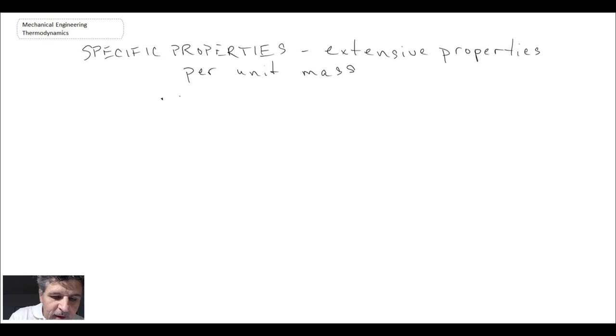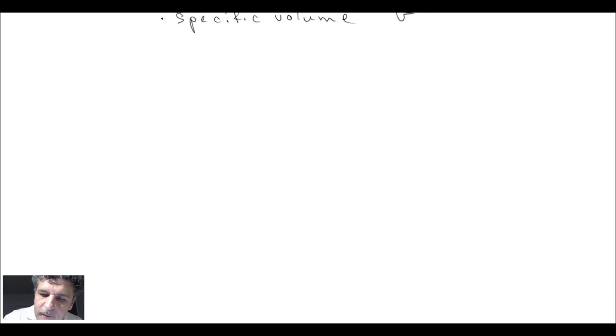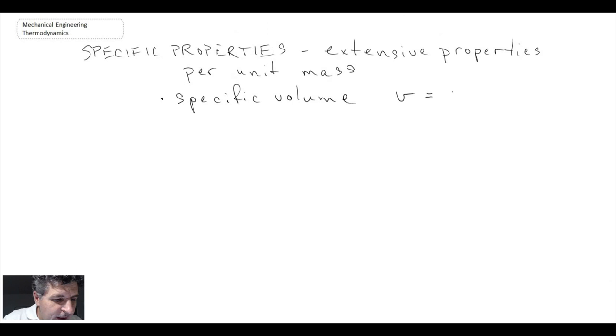And so examples of these: specific volume, and here we use a little v. Don't confuse it with velocity. In thermodynamics, this little v is actually the specific volume, and that is defined as being the volume divided by the mass. We have specific total energy, that is little e, which is the total energy expressed as capital E divided by mass.